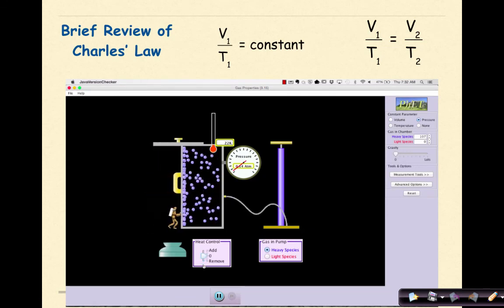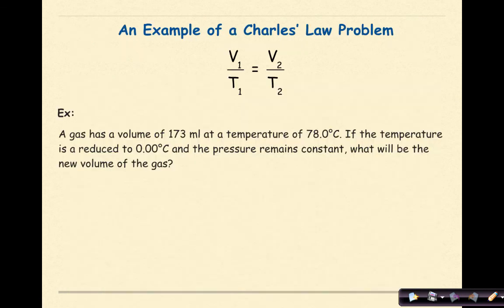This shows the direct relationship between the volume and temperature making a constant. Now let's look at an example of a Charles' Law problem.